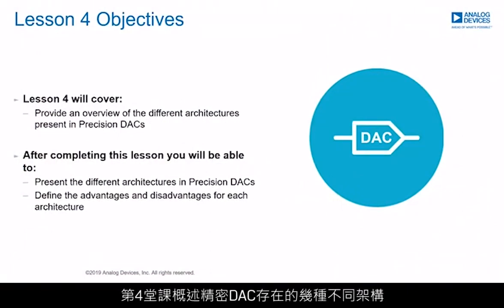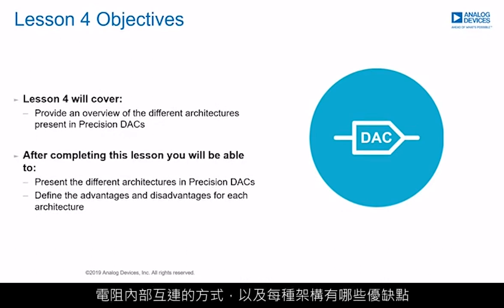This lesson 4 will provide an overview of the different architectures present in precision DACs. The main objective is to understand the different precision DAC architectures depending on how resistors are internally interconnected and what advantages and disadvantages each architecture offers.